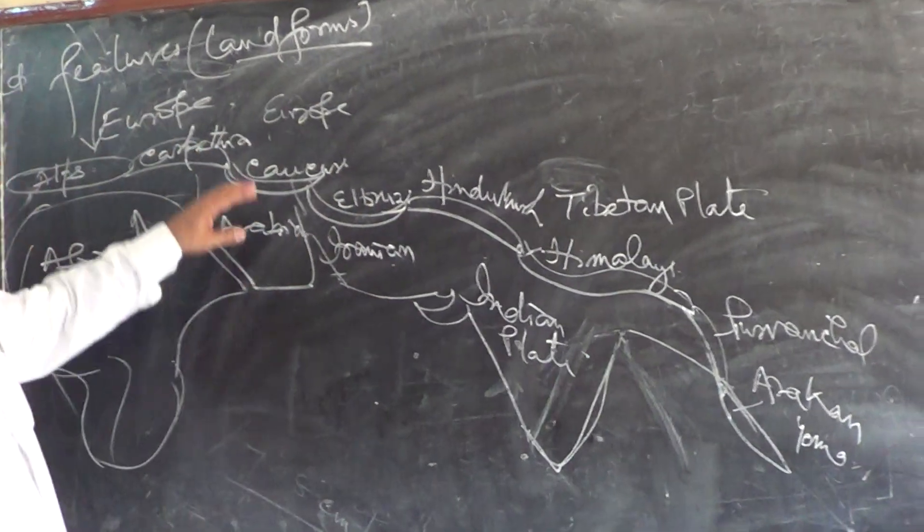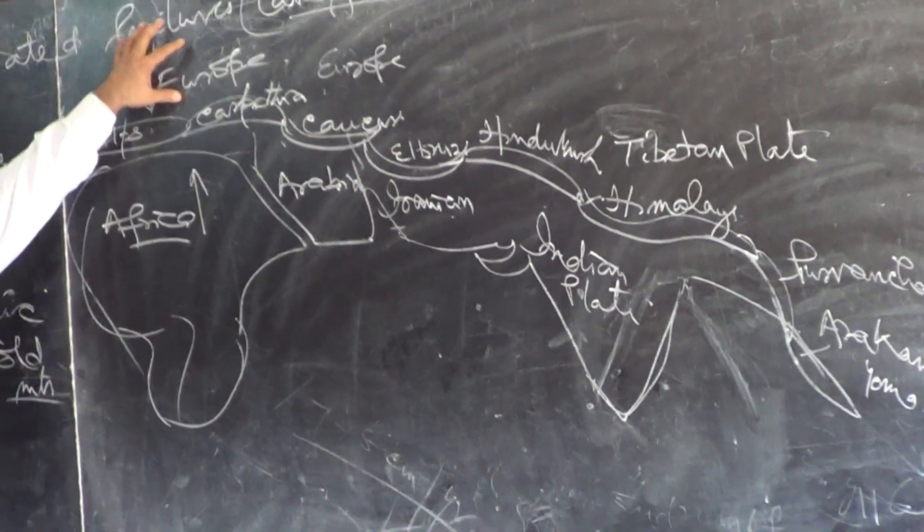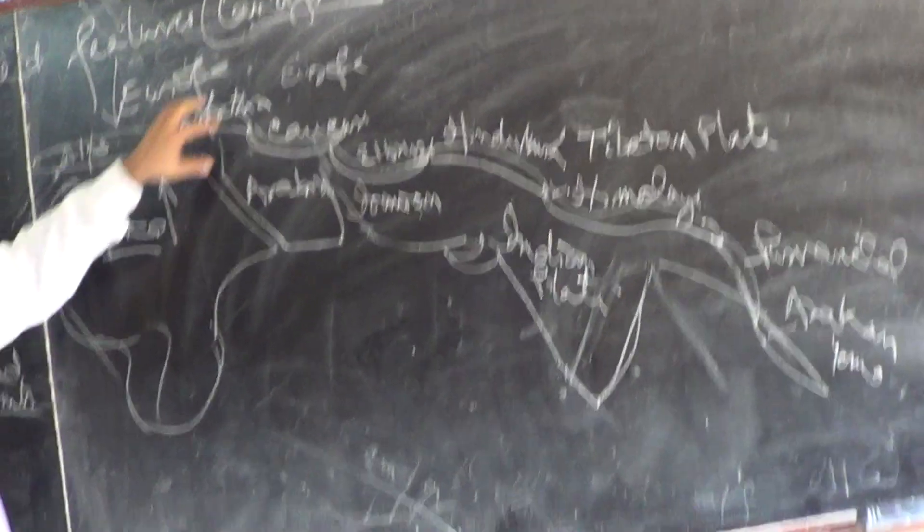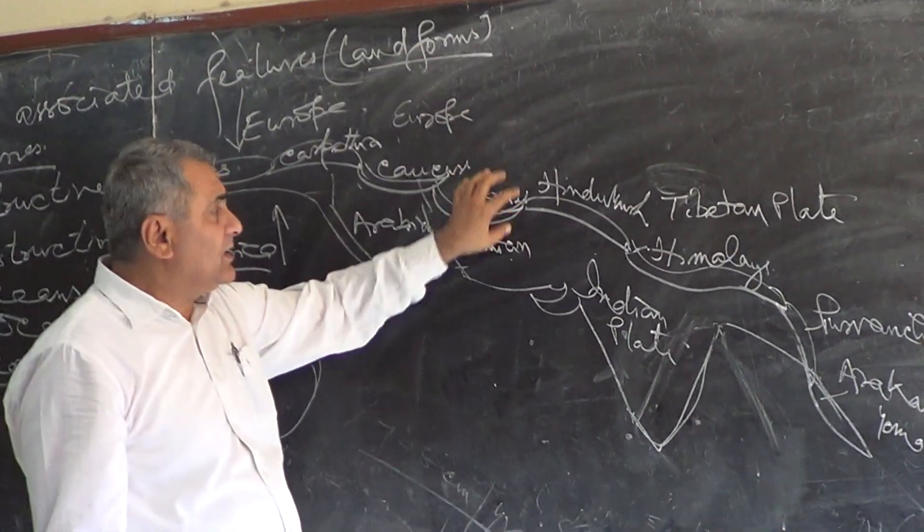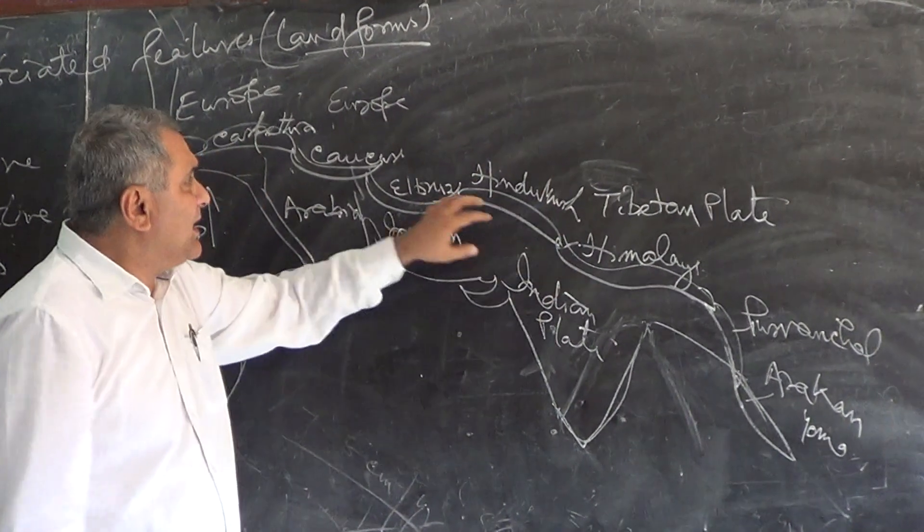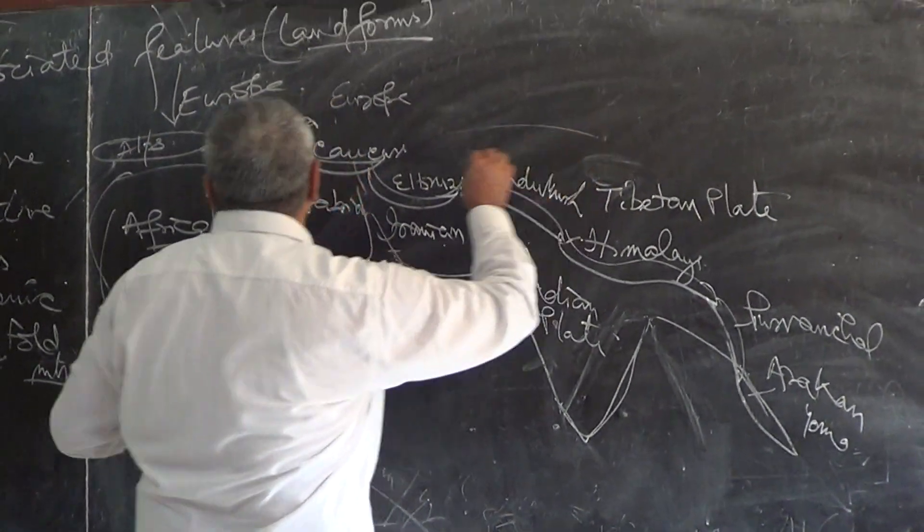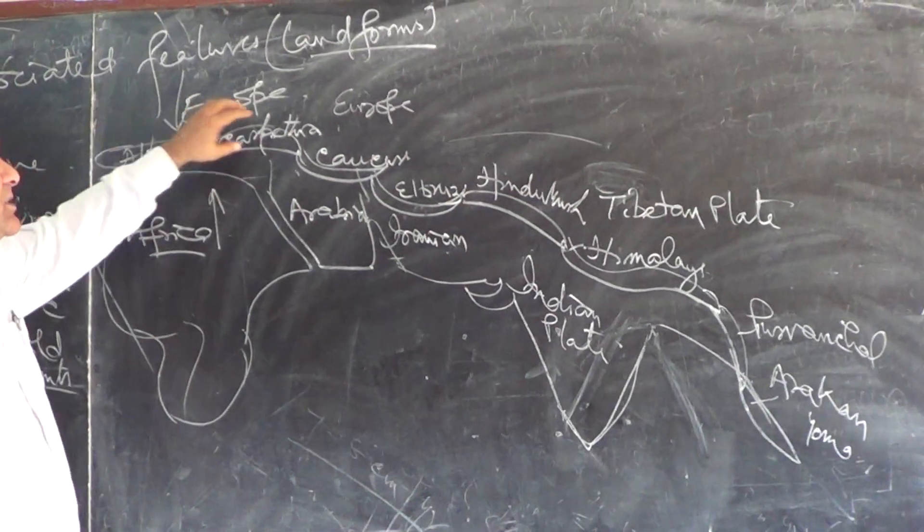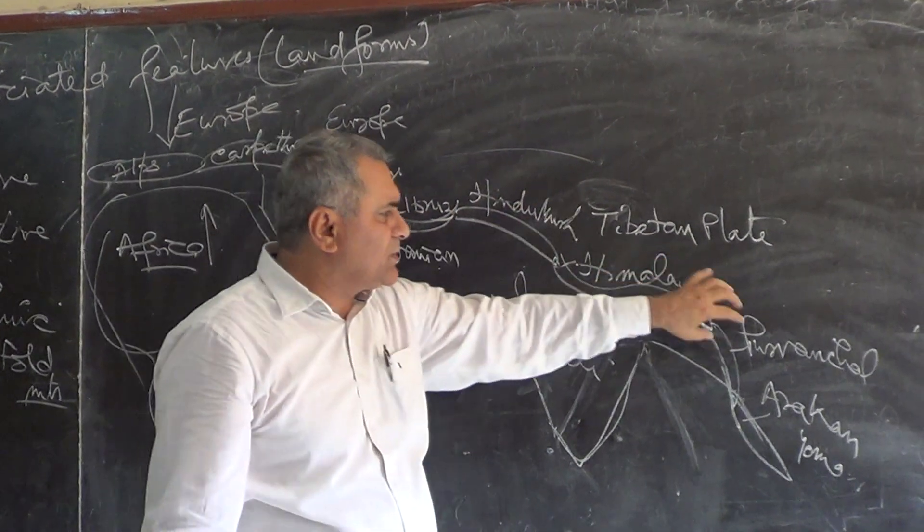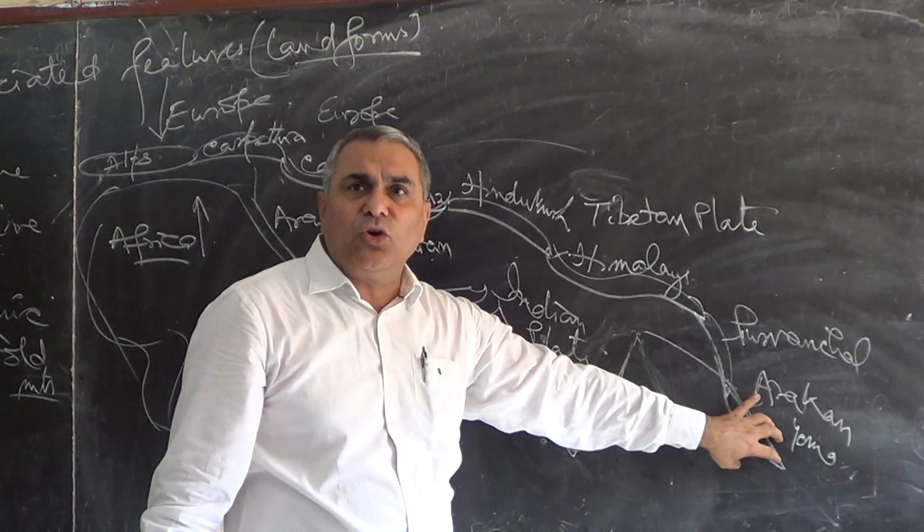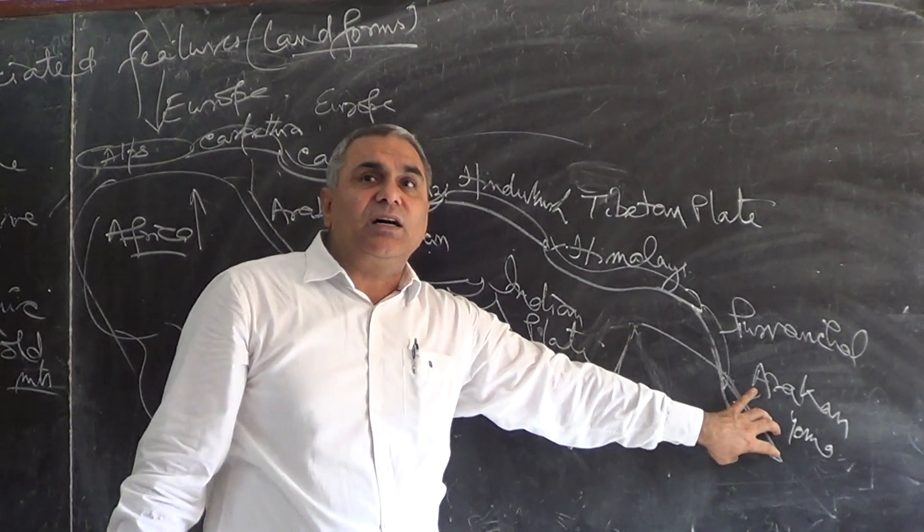Everywhere you can see one continental plate. So see the arrangement, this is all Eurasian Plates: Alps, Carpathian, Caucasus, Elbrus, Hindu Kush, Himalayas, Purvanchal, Arakan Yoma.